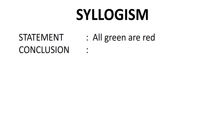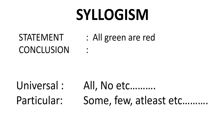In the statement, there are two types of statements. One is the universal statement and the other is the particular statement. Universal statements use words like 'all' and 'no.' Particular statements use words like 'some,' 'few,' and 'at least.'